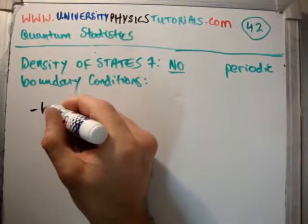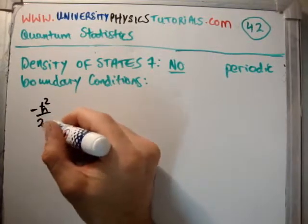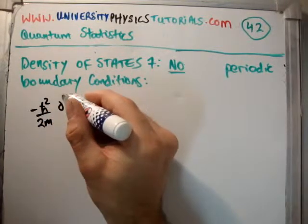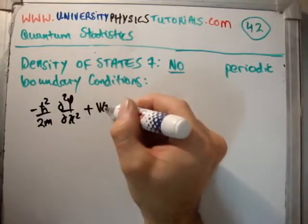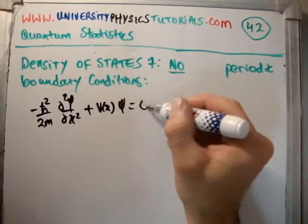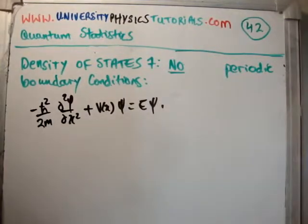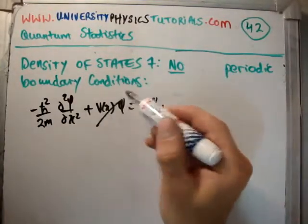So the time-independent Schrödinger equation is minus h bar squared over 2m del squared psi del x squared plus V of x psi is equal to E times psi. Now what we're going to do is we're going to assume the potential is 0.